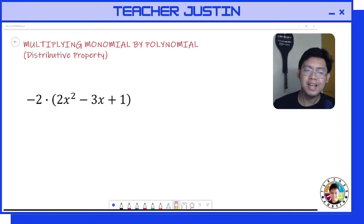Okay, let's have another example in multiplying monomial by polynomial. When multiplying monomial and polynomial, we apply the distributive property, wherein we multiply the monomial to each term of our polynomial. So let's have our example: we have negative 2 multiplied to 2x squared minus 3x plus 1.